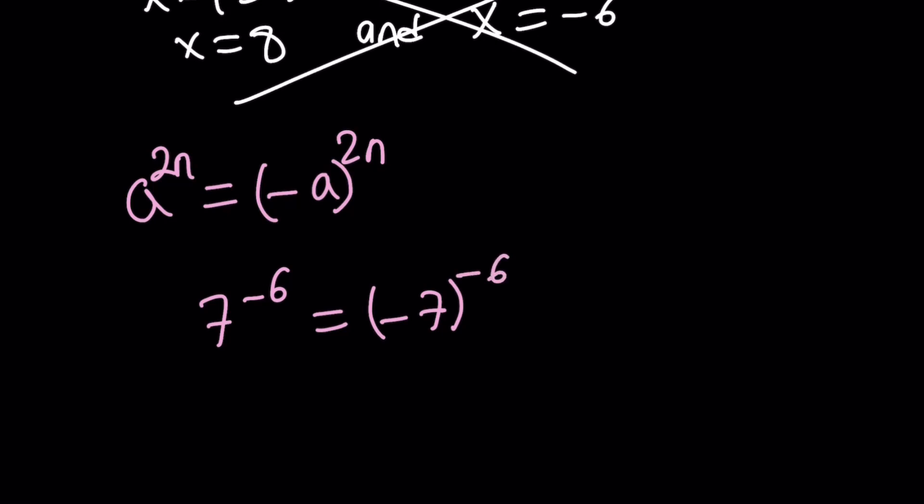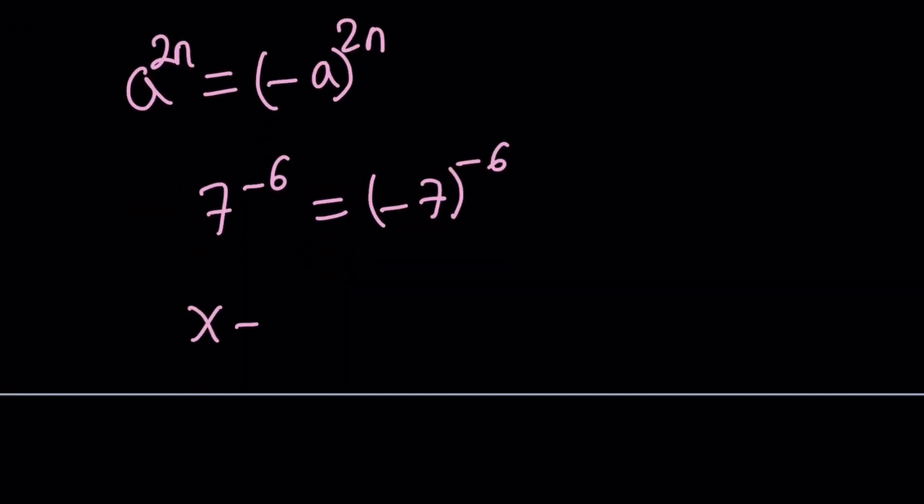So, 7 to the power negative 6 is the same as negative 7 to the power negative 6. And is that helpful? And the answer is yes. Why? Because x is 1 more than x minus 1. And negative 6 is 1 more than negative 7.